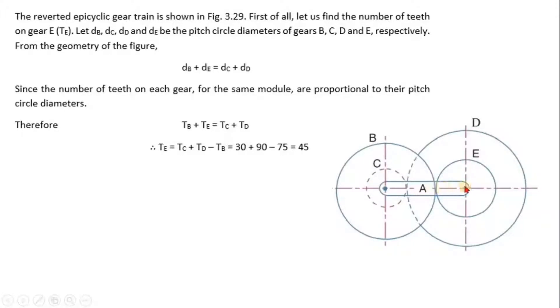Since the number of teeth on each gear for the same module are proportional to their pitch circle diameters, so we can say TB + TE is equal to TC + TD.